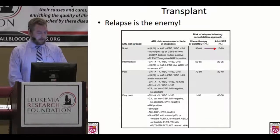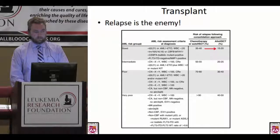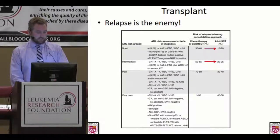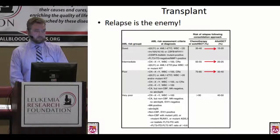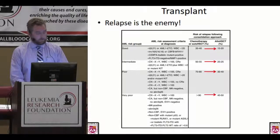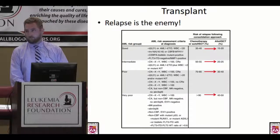Looking at the good-risk patients who received chemotherapy after remission, their risk of relapse is only about 35 to 40 percent — that gets reduced with transplant down to about 15 to 20 percent. For intermediate risk, the chance of relapse after chemotherapy is about a coin flip; with transplant that drops to about 20 to 25 percent. For poor risk, the relapse rate after chemotherapy is 70 to 80 percent; with transplant we can drop that to about 30 to 40 percent. And for the worst-outcome patients, relapse is essentially 100 percent after chemotherapy but drops to about 40 to 50 percent with transplant.